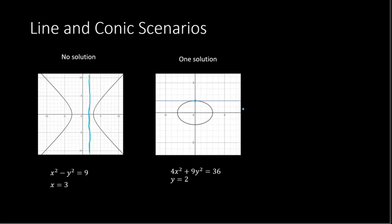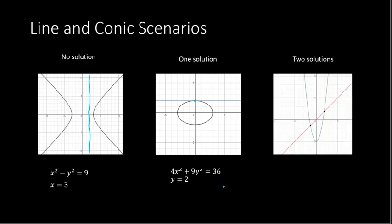That would be an example of one solution, and the quadratic system representing that graph is given below. We could also have two solutions — a parabola with a line cutting through and hitting at two different points. Those are scenarios with a line and some sort of conic section.